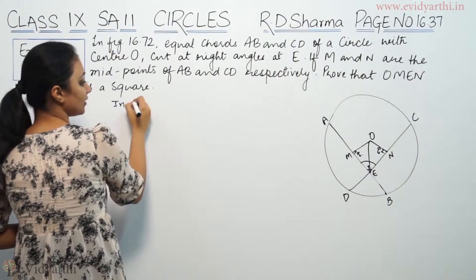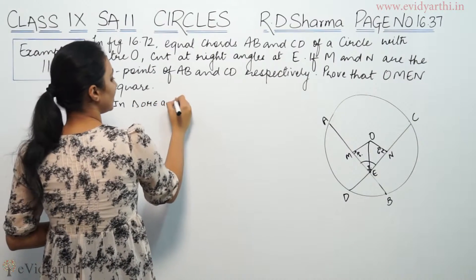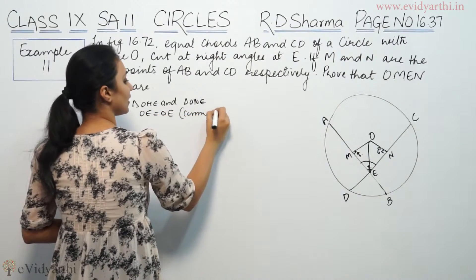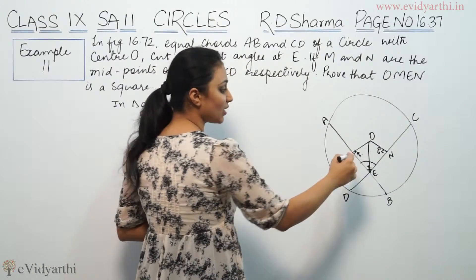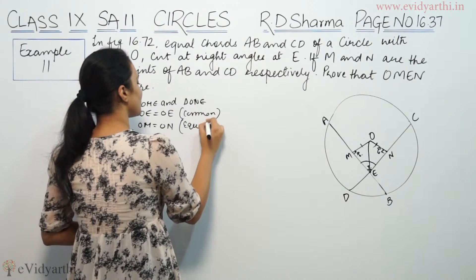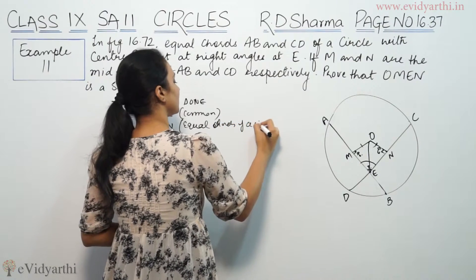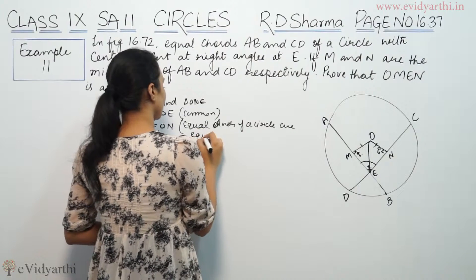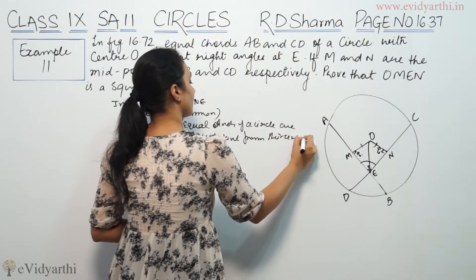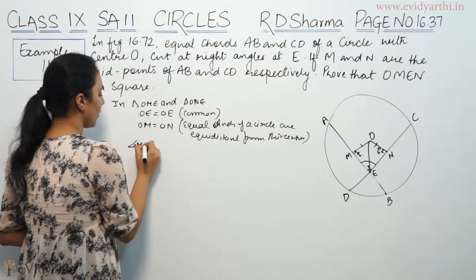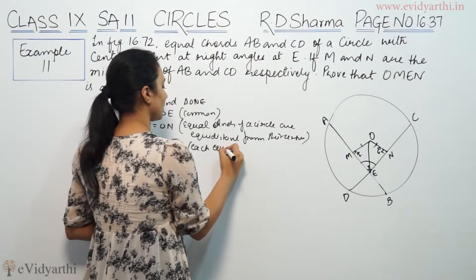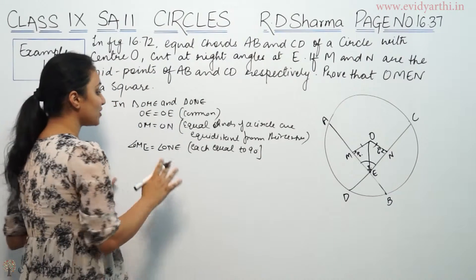So, we have triangle OME and triangle ONE. OE is equal to OE — this is common. Now our triangles are congruent.